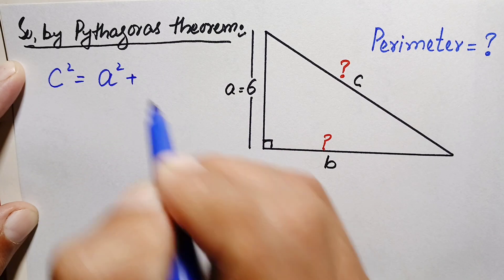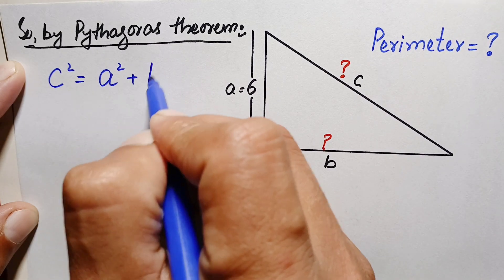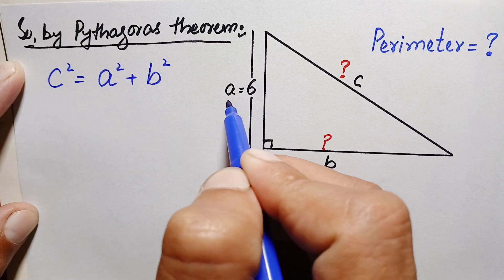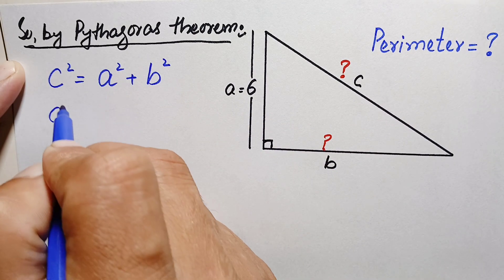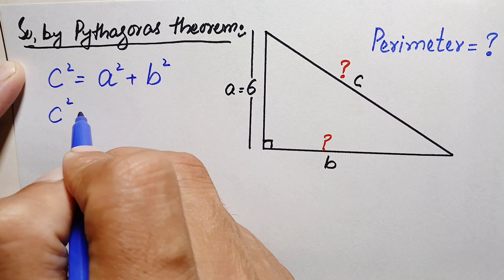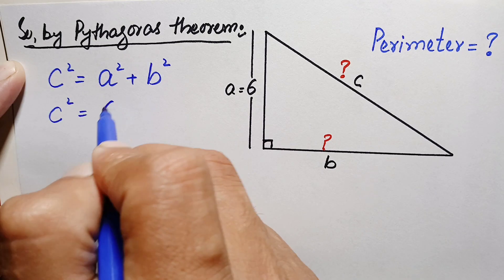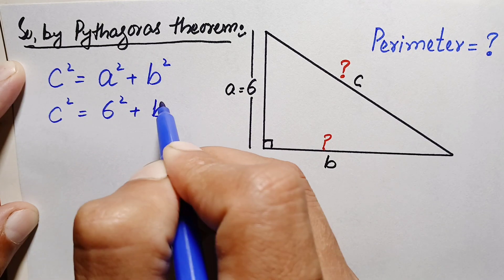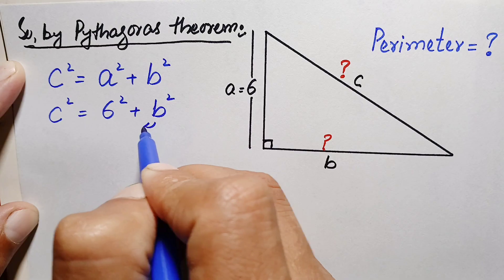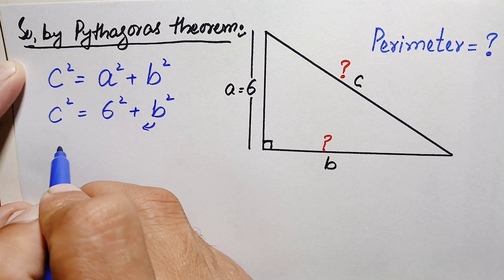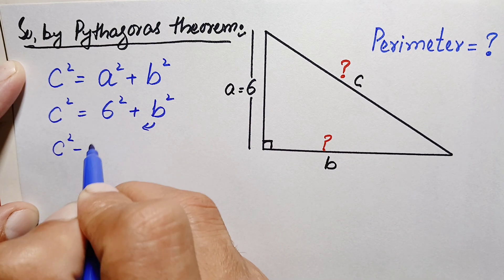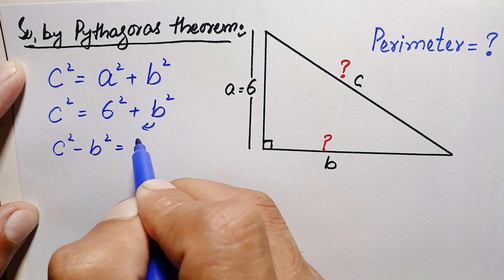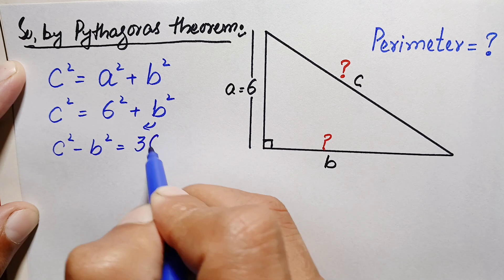Substituting the value of a, which is 6, this becomes: c² = 6² + b². Now we take b² to the left hand side, giving us c² − b² = 6², which is simply 36.